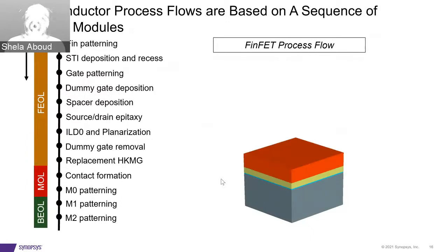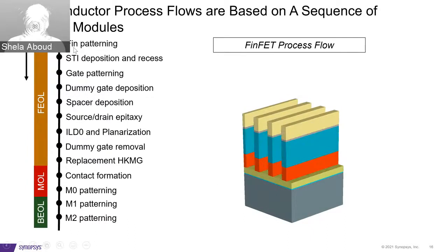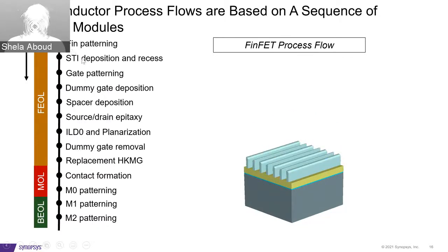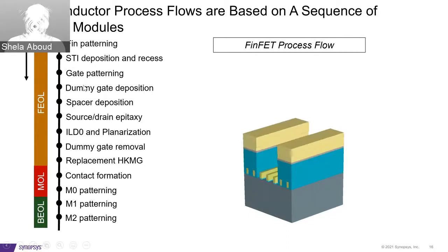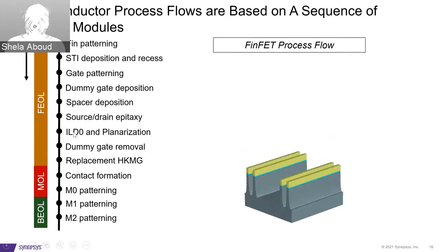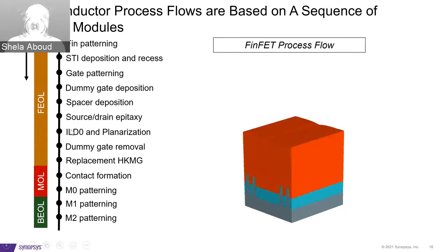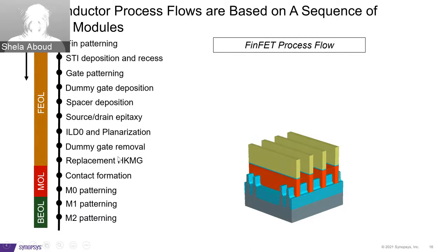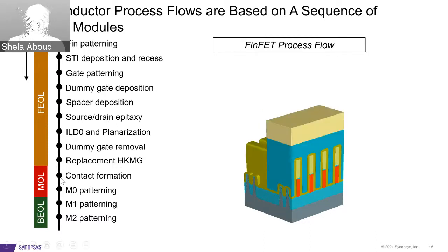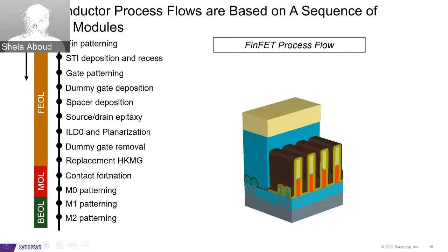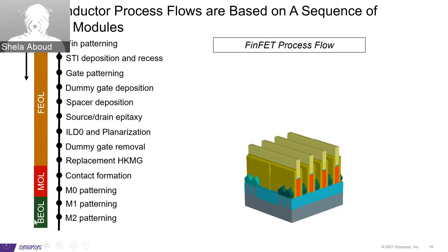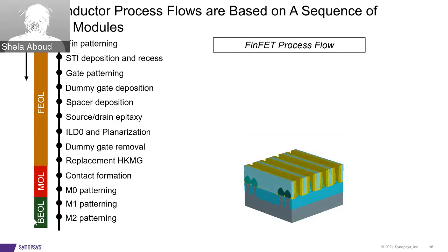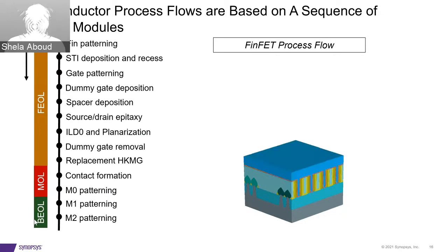Transitioning to FinFETs, the movie on the right plays through these module steps. We have fin patterning, deposition and recess, gate patterning, spacer deposition, source-drain epitaxy, then interlayer dielectric and planarization. There are a couple of novel modules developed specifically for FinFETs, particularly the high-K metal gate. This constitutes the front-end-of-line. The middle-end-of-line is composed of contact formation and M0 patterning — the first metal layer — and the back-end-of-line denotes the metal layers above that. You can see how, as we go through these steps, the FinFET structure is built up.